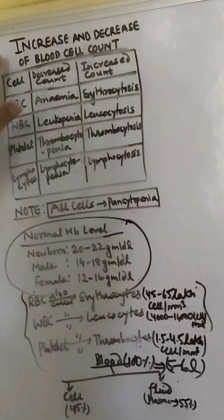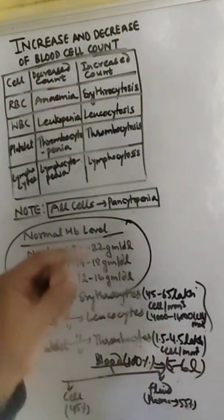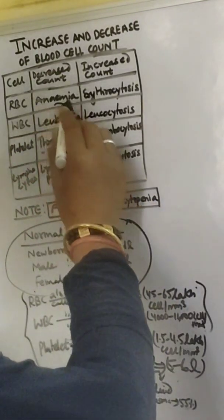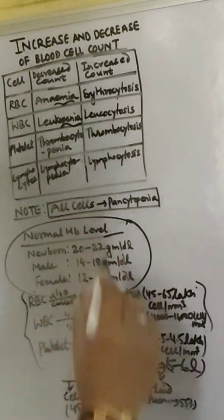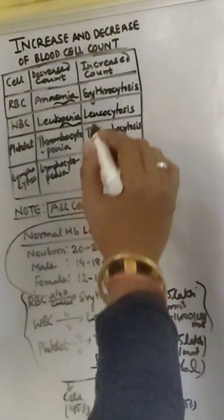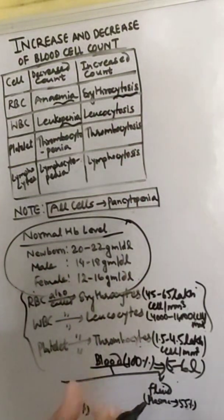And now we are going to discuss about increase and decrease of blood cell count. So decrease count, increase count. Before that we must be familiar about if the suffix includes anemia and penia, then it is a decreased count. And if the suffix cytosis is written, then it is increased count.